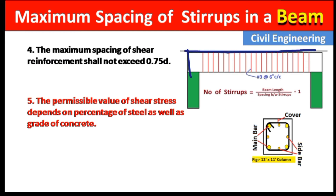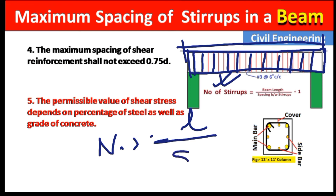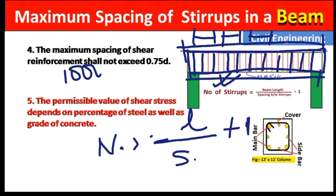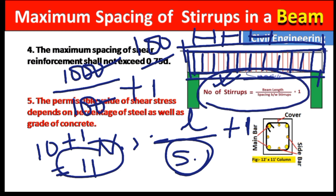Bonus point: to calculate the total number of stirrups in a beam, where the spacing between stirrups is uniform, the formula is: Number of stirrups = (Length of beam / Spacing) + 1. For example, if the length of the beam is 1000 mm and the spacing is 100 mm, then the number of stirrups = (1000 / 100) + 1 = 10 + 1 = 11 stirrups.